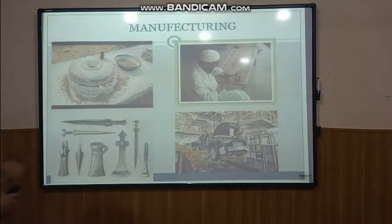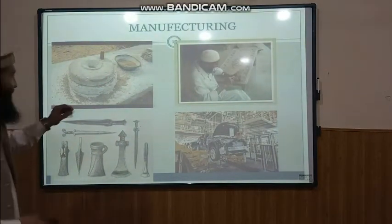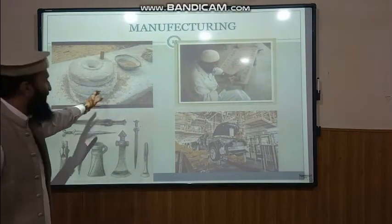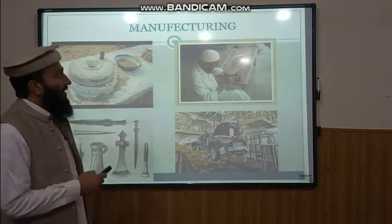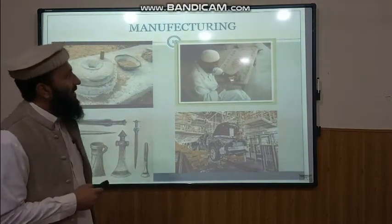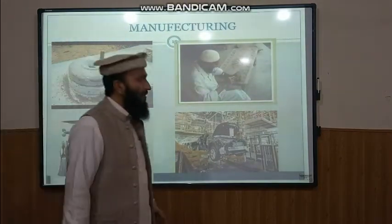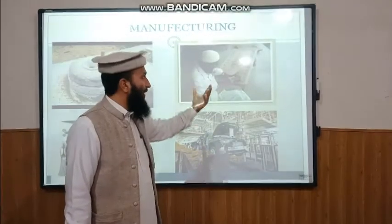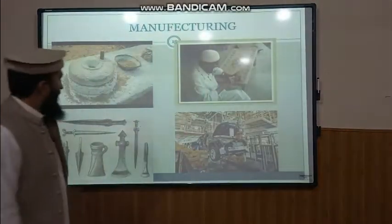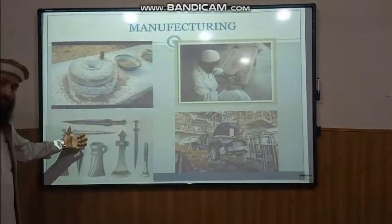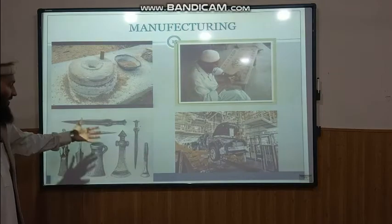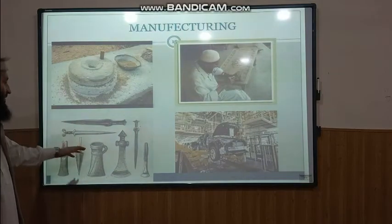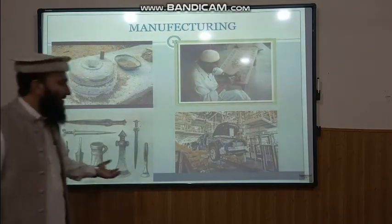For example, this is the local machine through which we convert wheat into flour. This person is working on the wheat and adding value to that wheat. In initial times, there were certain implements which were made from metals, and this is the secondary economic activity.